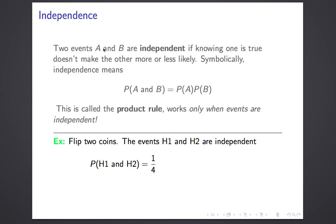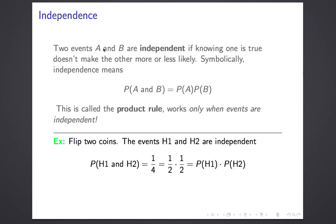One more example. If I flip two coins, the event that the first coin comes up heads and the event that the second coin comes up heads are independent because one coin doesn't affect the other. You can see that in the product rule because the probability that they both come up heads is 1 out of 4, which is the product of the probability of each one coming up heads.